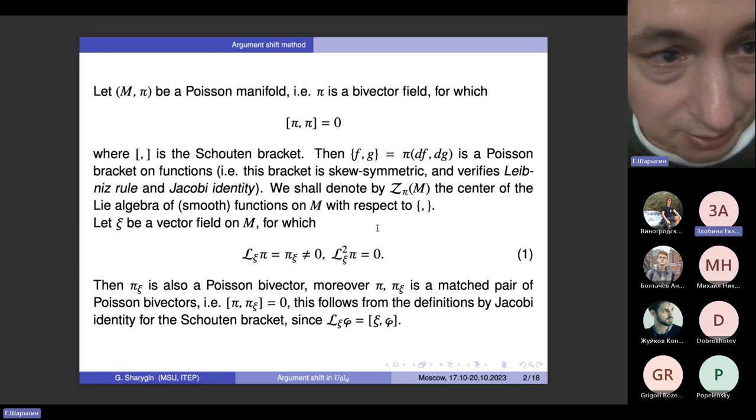We begin with some very elementary discussion. Let M, pi be a Poisson manifold, where pi is a Poisson bivector which verifies the standard equation: its Schouten bracket with itself vanishes.